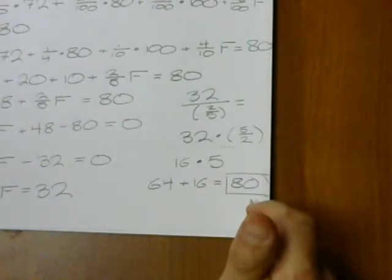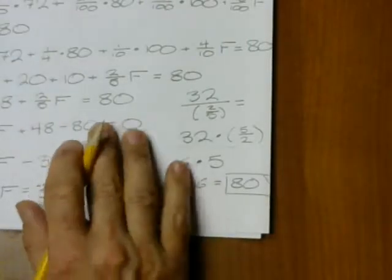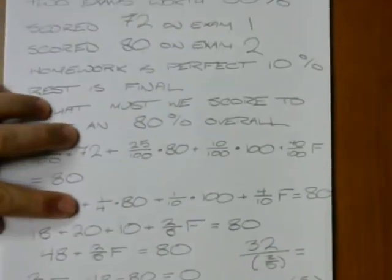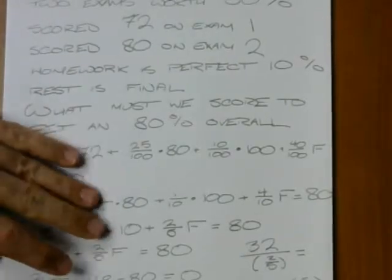So why would that even make any sense? I mean, I wanted to get an 80 overall, and I didn't make 80 on the first exam. What's going on here? How come I got 80?